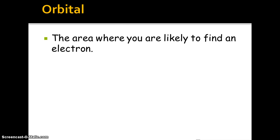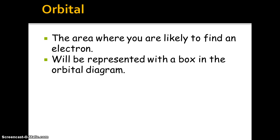Orbital - the area where you are likely to find an electron. This will be represented with a box in the orbital diagram. So that little box below is going to be your orbital in the orbital diagram.